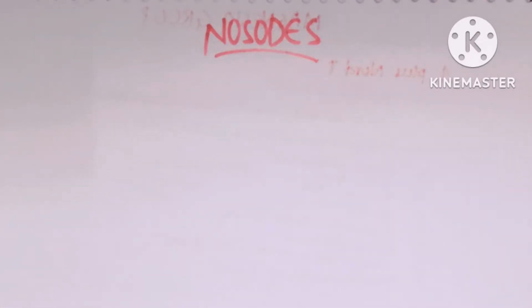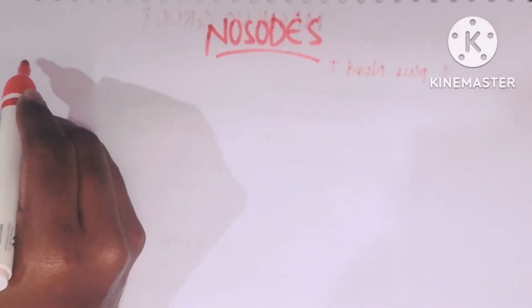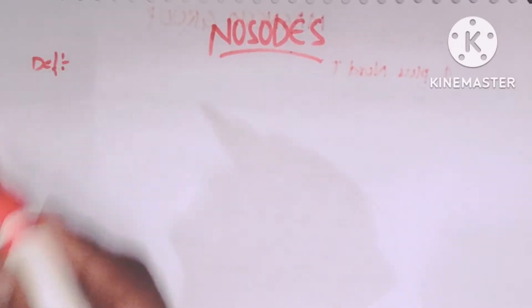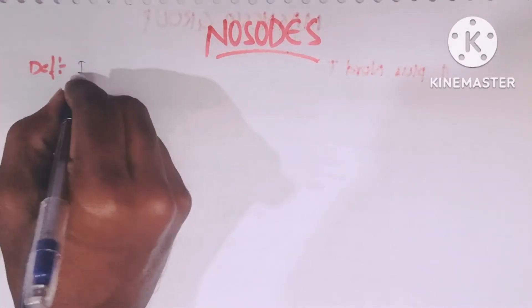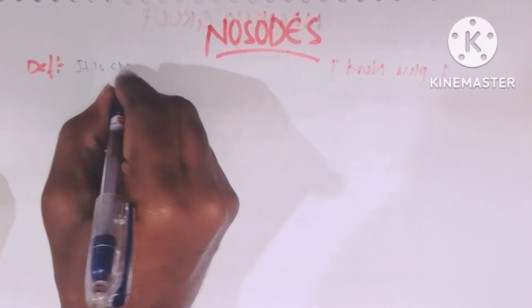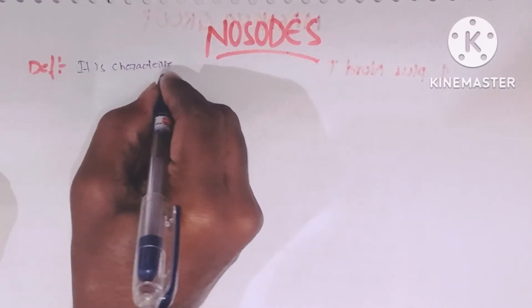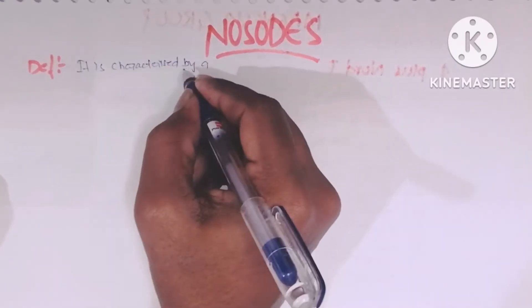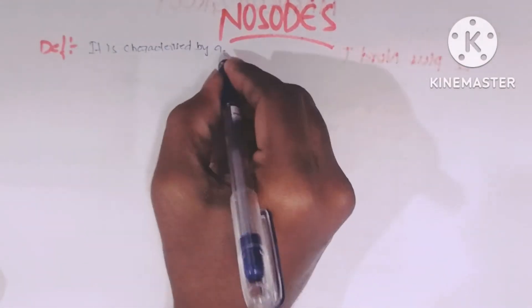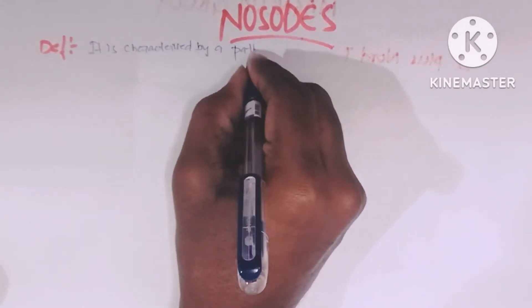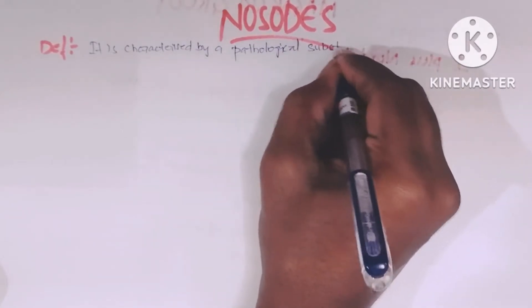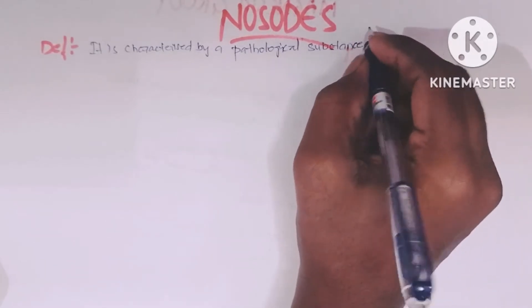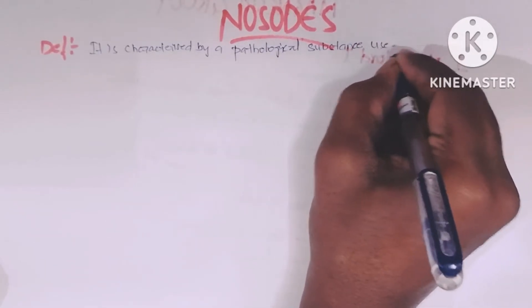Coming to the nosodes, the definition is very important in nosodes and in circles too. Nosodes are characterized by a pathological substance used as medicine. Always remember that pathological substance means disease condition only.